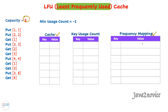Now when there are more than one least frequently used keys in this list, how do we choose which key to delete? As per the problem statement, we need to identify the least recently used key out of this list. So rather than using a plain list as a value, we will use a doubly linked list as a value so that we can control node order based on usage.